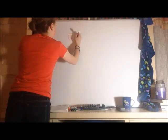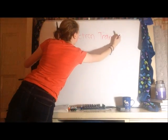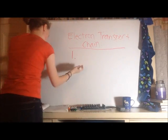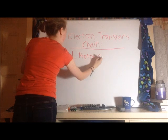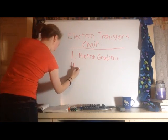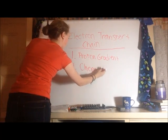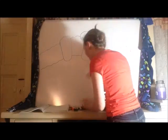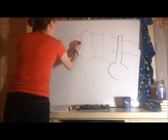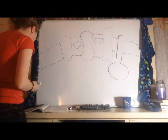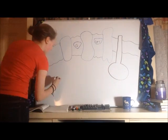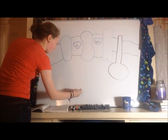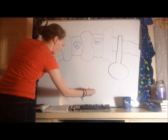The electron transport chain is divided into two sections. The first is called the proton gradient section, which is exactly what it sounds like — developing a gradient of protons across a membrane in the inner mitochondrial matrix — and the second part is chemiosmosis. We've got to draw in our membrane of the inner mitochondrial matrix. These are all membrane proteins, and here are some electron-carrying proteins in between. Where I'm writing is the inner mitochondrial matrix, and on the outside is the outer mitochondrial matrix, and on the outside of that would be the cytoplasm.